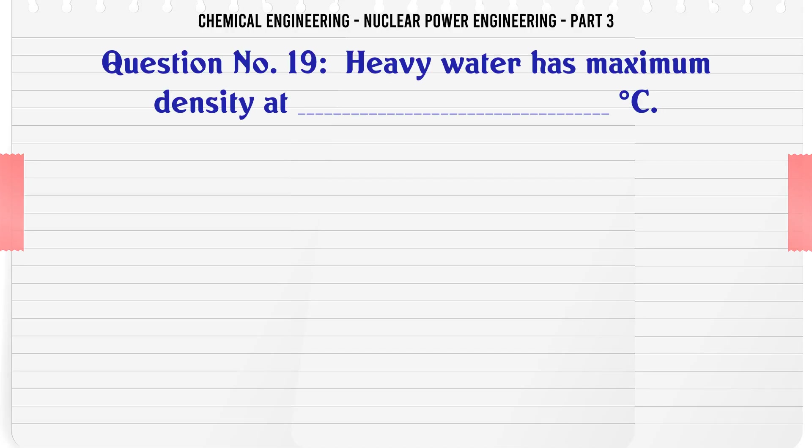Heavy water has maximum density at 11.6°C. The correct answer is 11.6.